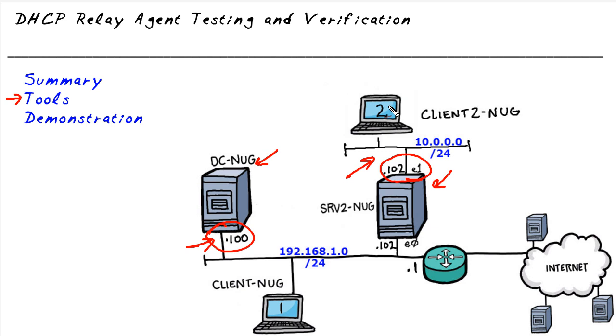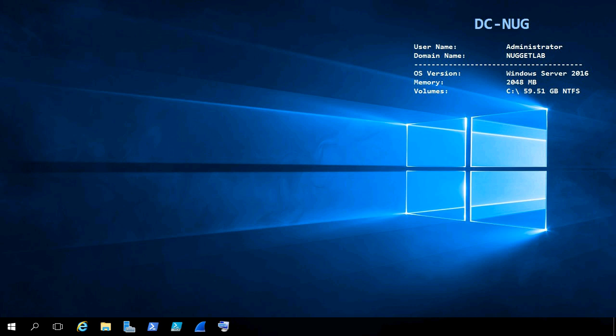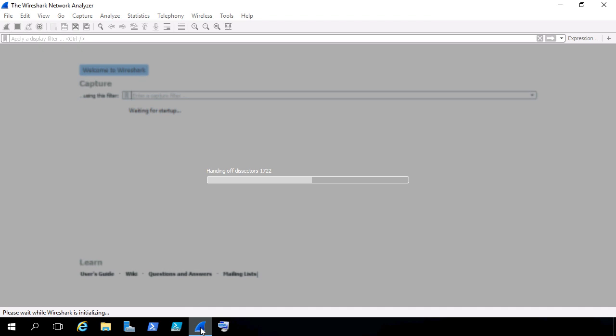In the lab environment, I'm going to make sure that Client 1 and Client 2 are powered up, then go to DC-NUG and Server 2 to start the captures. I've taken the liberty of powering on both clients. Here on DC-NUG, which is acting as our DHCP server, let's start a Wireshark packet capture by clicking on the shark fin icon in the taskbar. We'll simply double-click on Ethernet 0 to start the capture.